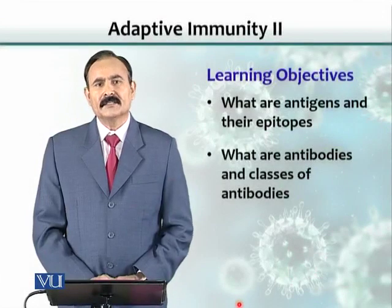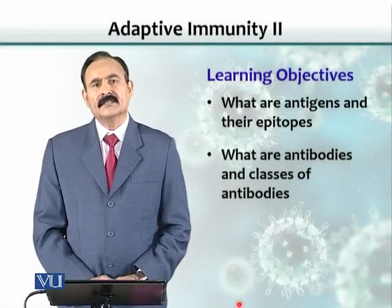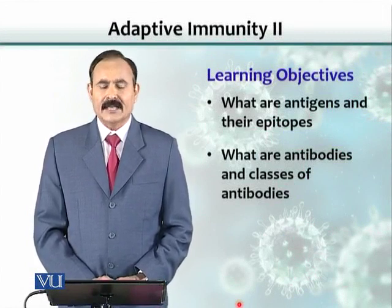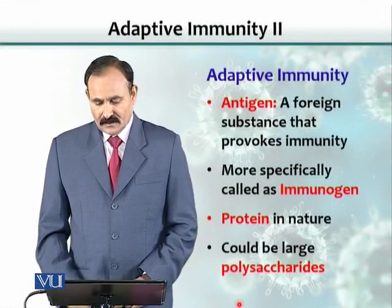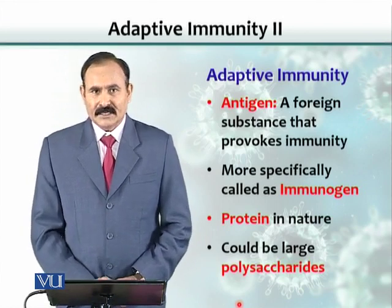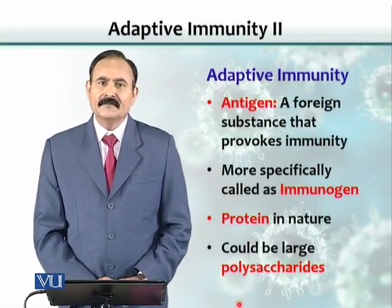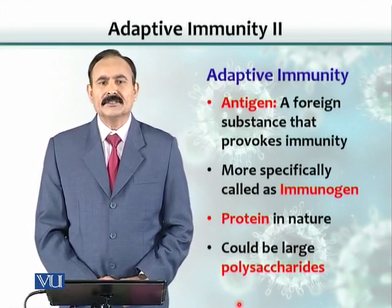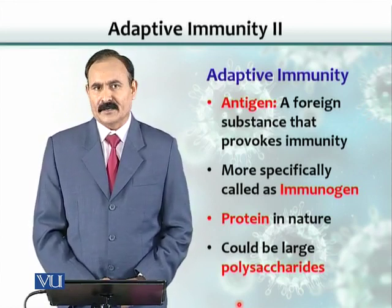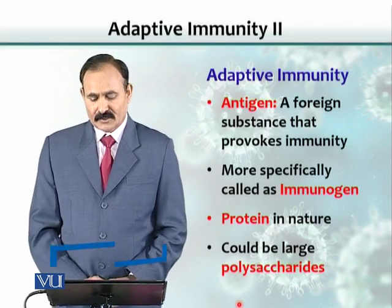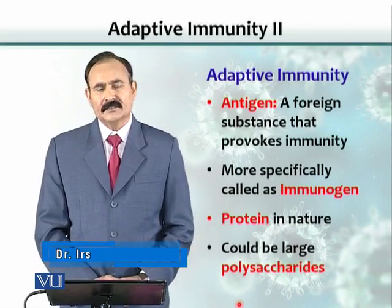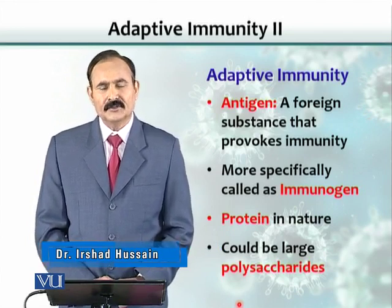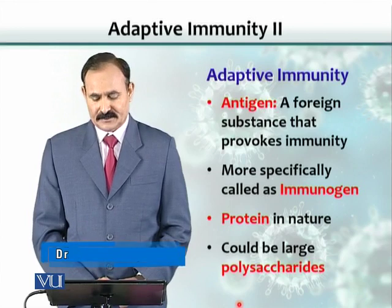Learning objectives include: what are antigens and their epitopes, and what are the various antibody classes. An antigen, by definition, is any foreign substance that when injected into the body provokes an immune response. More specifically, these antigens are called immunogens, and proteins are very good immunogens or very good antigens.